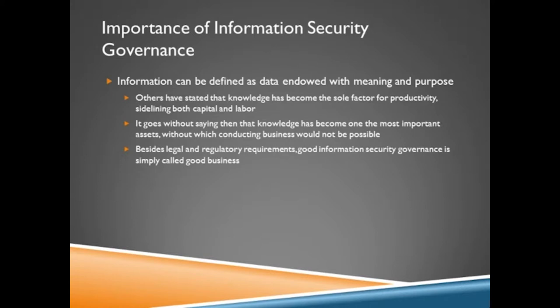Think about online companies that are booksellers — they have to have a lot of different information and knowledge exchanges just for a single transaction. You have to have connectivity with your bank to show available funds, a transfer of those funds electronically to the seller's bank, communication with inventory and shipping, and ordering replacements after products ship out to you. All of that is just on a single transaction, meaning that without this kind of information and ability for communications, they just wouldn't be able to do any type of business at all. There are a lot of legal and regulatory requirements, and good information security governance is simply called doing good business.